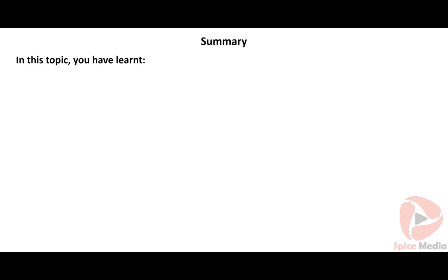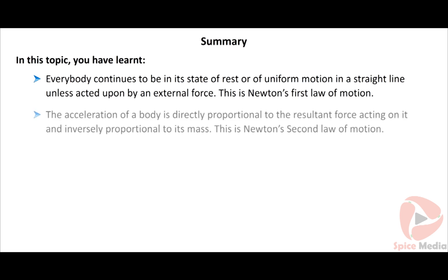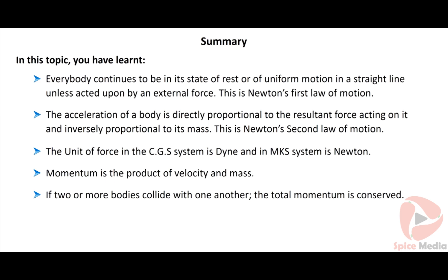In this topic, you have learnt that every body continues to be in its state of rest or of uniform motion in a straight line unless acted upon by an external force — this is Newton's first law of motion. The acceleration of a body is directly proportional to the resultant force acting on it and inversely proportional to its mass — this is Newton's second law of motion. The unit of force in the CGS system is dyne and in the MKS system is Newton. Momentum is the product of velocity and mass, and if two or more bodies collide with one another, the total momentum is conserved.